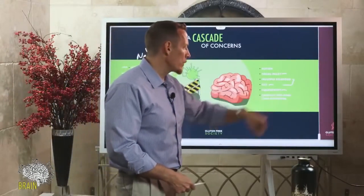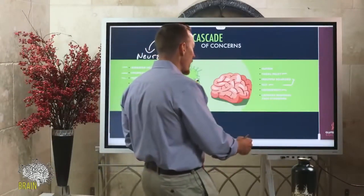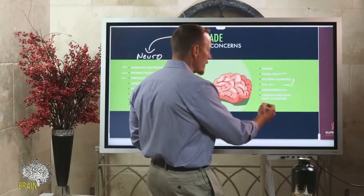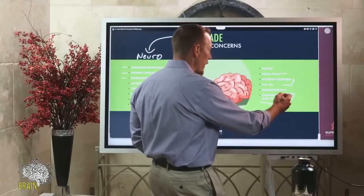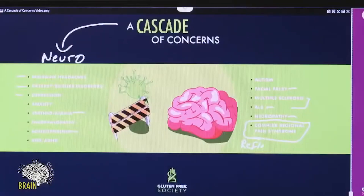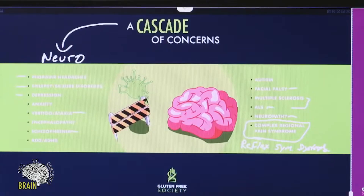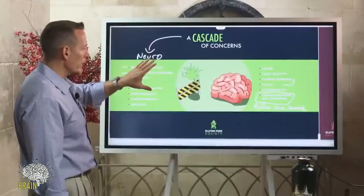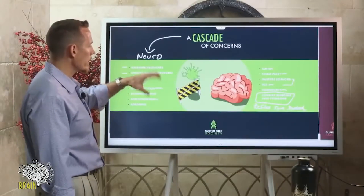And then something called complex regional pain syndrome, which is a very intense type of pain. It's oftentimes also referred to as reflex sympathetic dystrophy. If you've had either one of those diagnoses, these are the neurological manifestations of leaky brain.